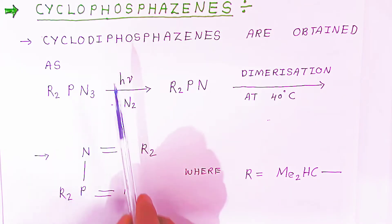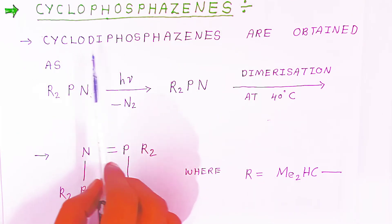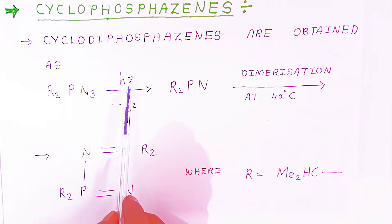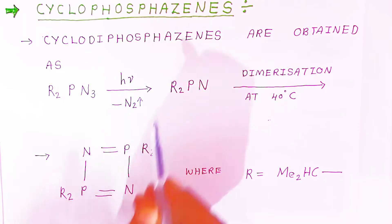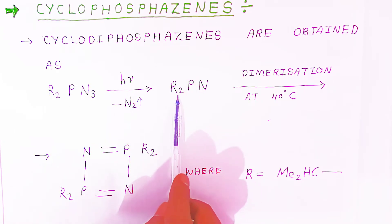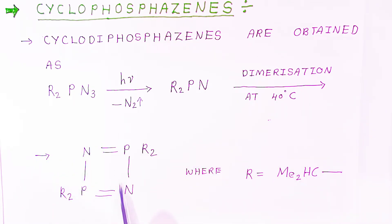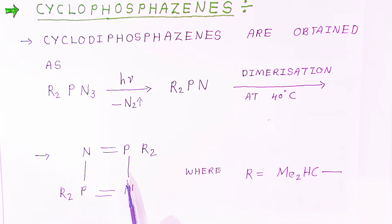Now we are going to see the cyclophosphazenes. Cyclodiphosphazenes are obtained from R2PN3 in the presence of UV light, with elimination of one nitrogen molecule. You are getting R2PN, and dimerization takes place at 40 degrees Celsius to form a ring-like cyclic compound with nitrogen-phosphorus double bond and phosphorus-nitrogen single bond. R can be any methylated carbohydrate. So this way you can form the cyclophosphazenes.